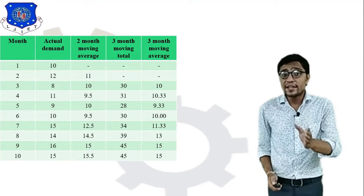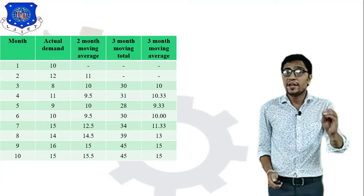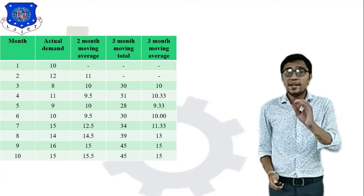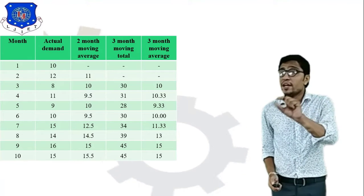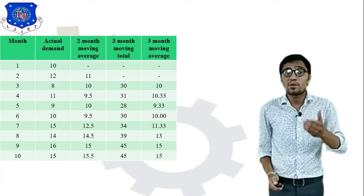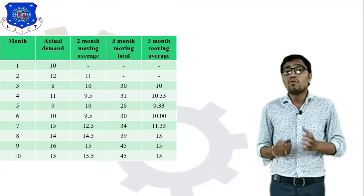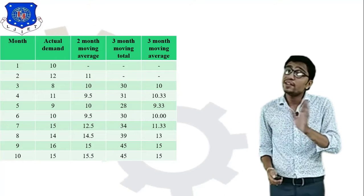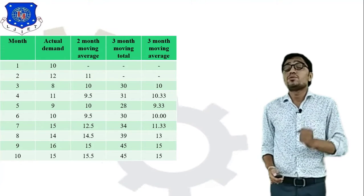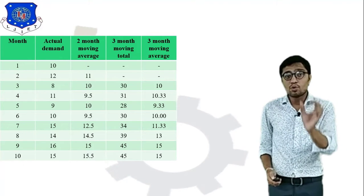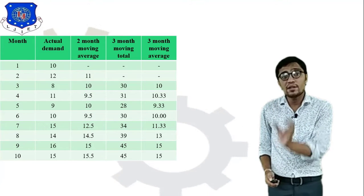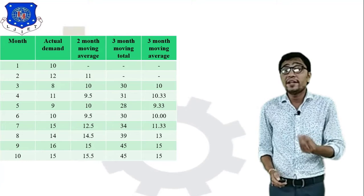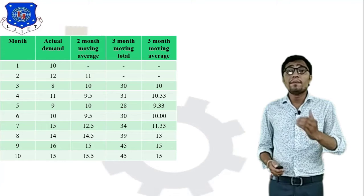I have set up a table with five columns. The first column is the month (1st to 10th), the second column is the actual demand given in the data. The third column is the two-month moving average, the fourth column is the three-month moving total, and the fifth column is the three-month moving average.